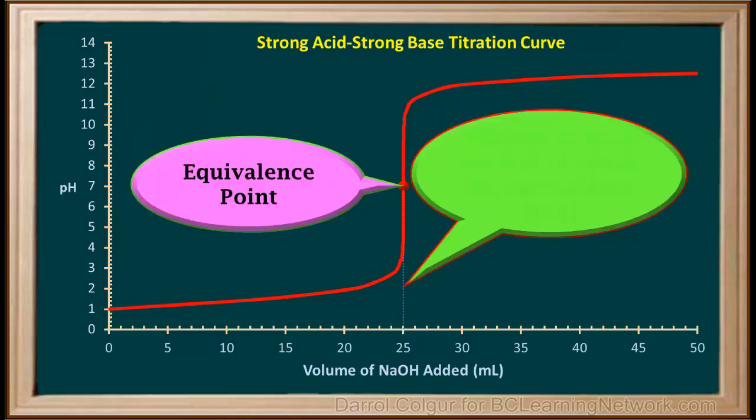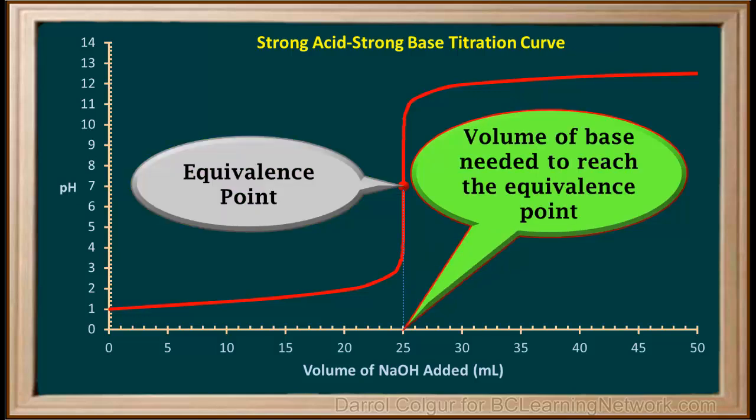The volume of base required to reach the equivalence point of any titration can be determined by drawing a straight vertical line down from the equivalence point. The value on the x-axis where this line meets the axis is the volume of base required. We can see that in this titration, it is 25 milliliters.